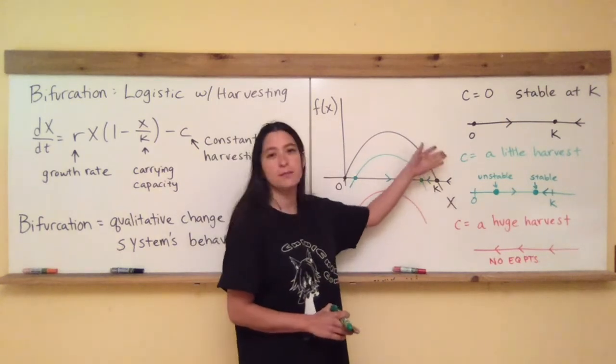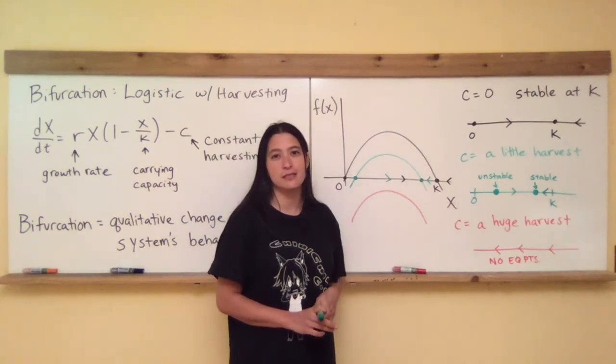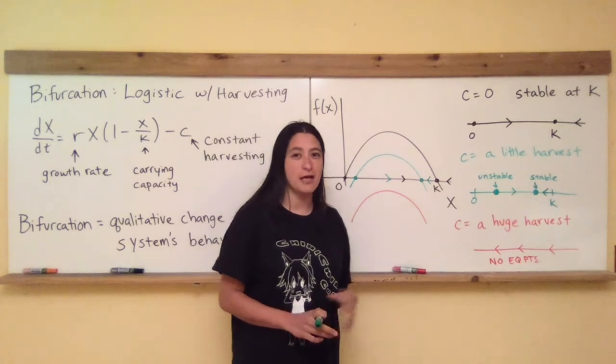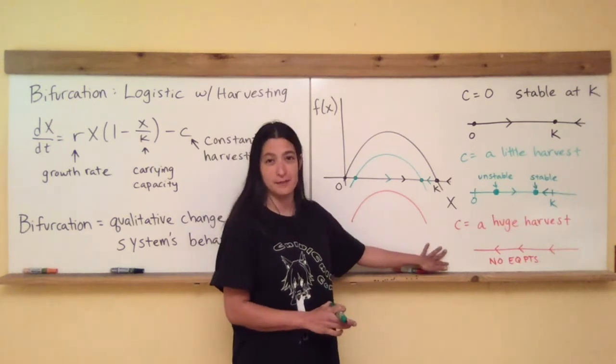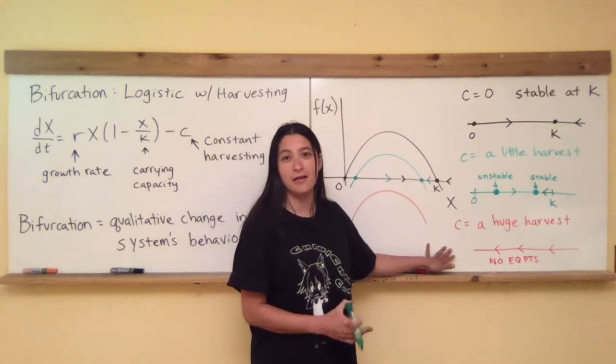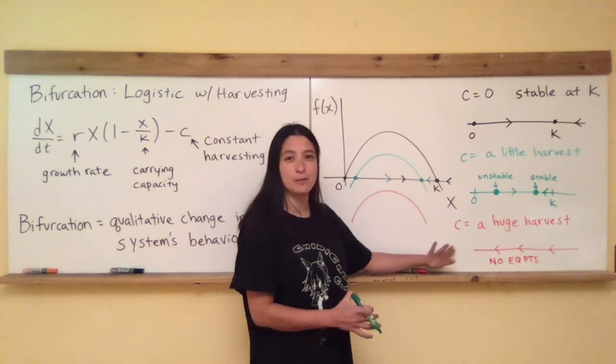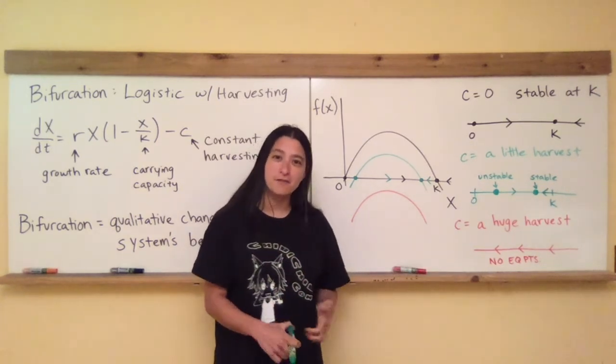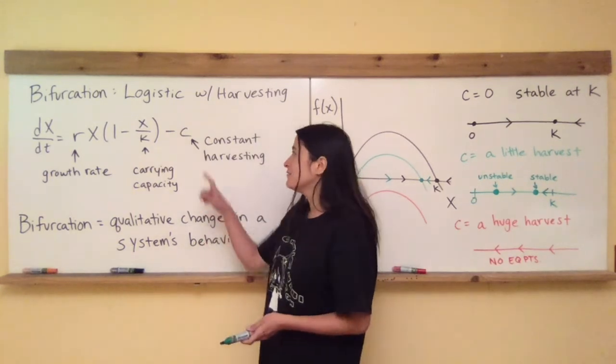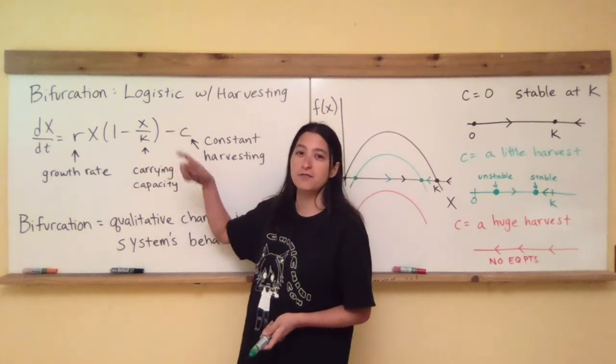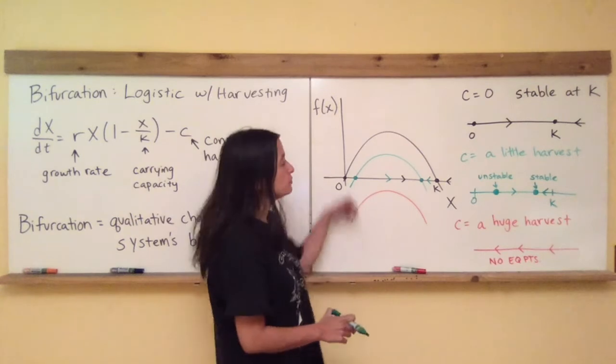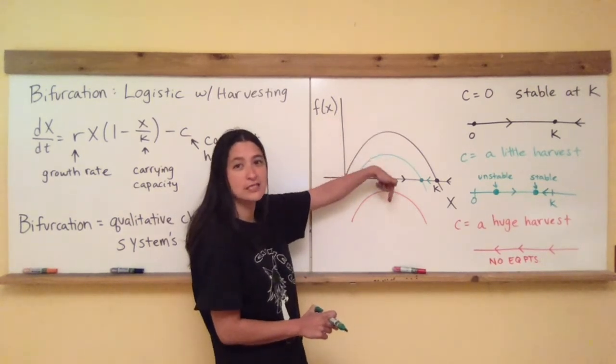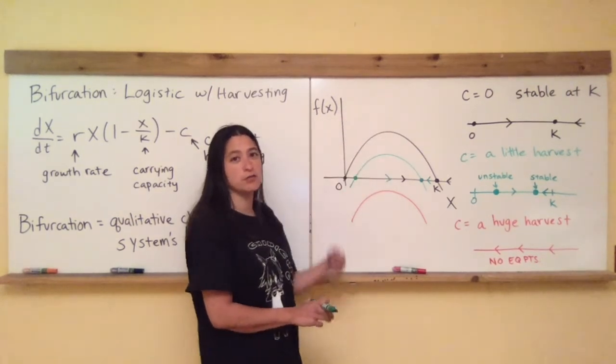Qualitatively, the green system, pretty much the same thing as the black system. But now let's compare that with this red one where I'm saying I'm going to take a huge harvest. If I have that logistic population and it's looking pretty delicious, I'm just going to harvest a whole bunch of it. If I harvest a whole bunch of it, and the value for c is a very large value, that would correspond to a very large vertical translation downwards of the original black graph.